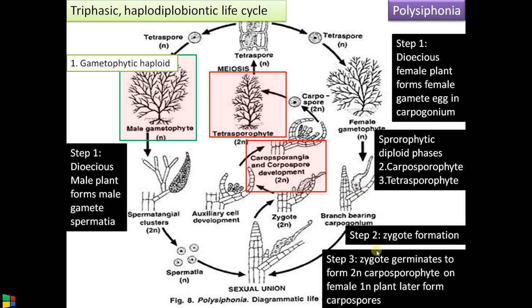In step 2, this zygote germinates to form a diploid carposporophyte on the female plant itself, which later forms carpospores. This is a deviation from the normal life cycle — the zygote does not give rise to a diploid plant directly. There is an intermediate phase dependent on the female gametophyte: the carpogonium becomes the carposporophyte.